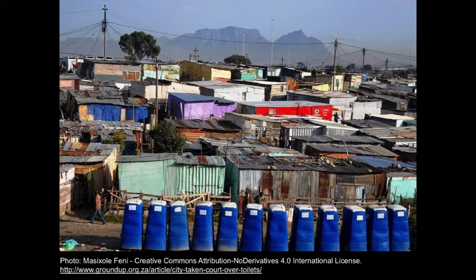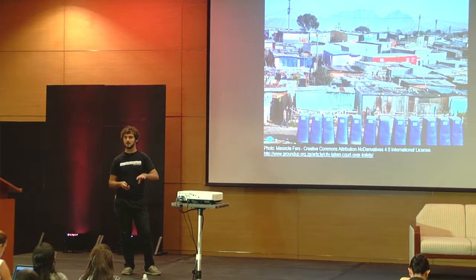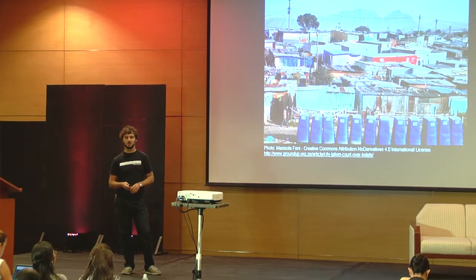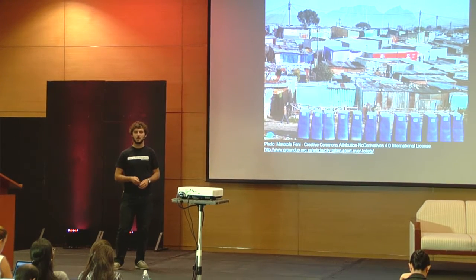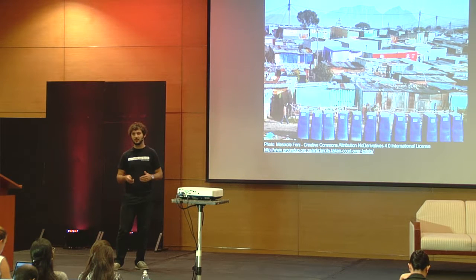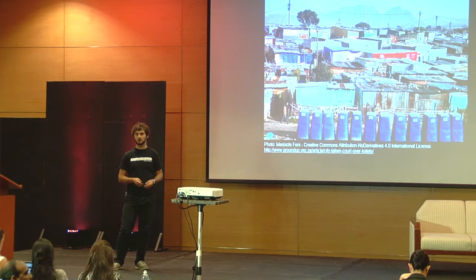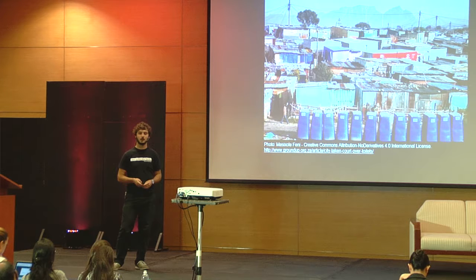Another project I want to talk about is toilets and basic sanitation in informal settlements. This is roughly what informal settlements look like in South Africa — usually slightly outside the cities, which means expensive transport costs and very bad infrastructure. People usually live there hopefully before moving into permanent accommodation, but some of these informal settlements have been there since the end of apartheid, since the beginning of our democracy — about 20 years.